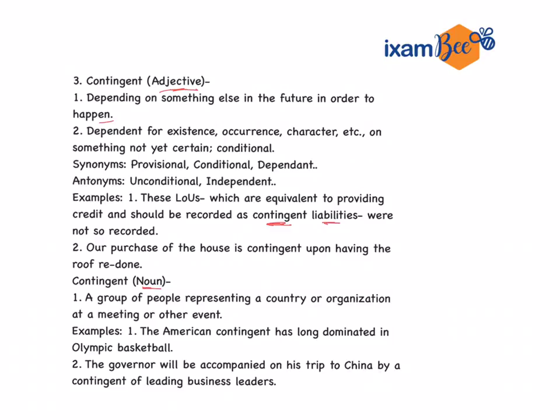To understand contingent liability: suppose your friend has taken a loan and you are a guarantor — you have guaranteed that your friend will repay the loan. This is your contingent liability. If your friend does not pay the loan, then this liability falls on you. If your friend does repay, you are just a guarantor and the problem is over. So as a guarantor, you carry a contingent liability.